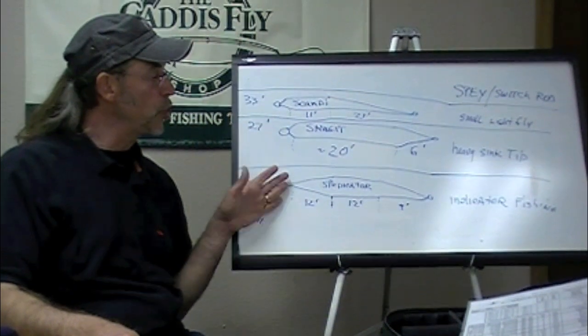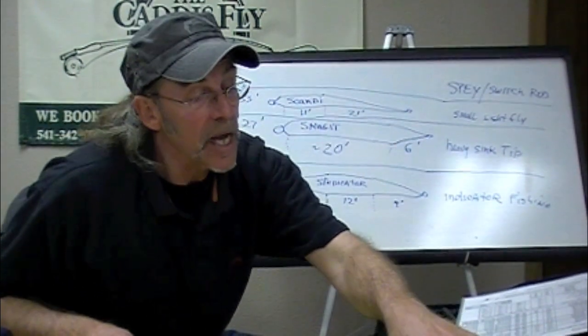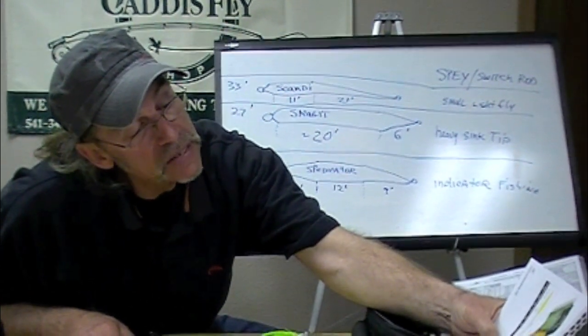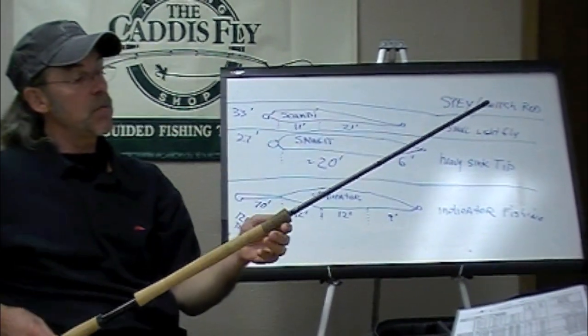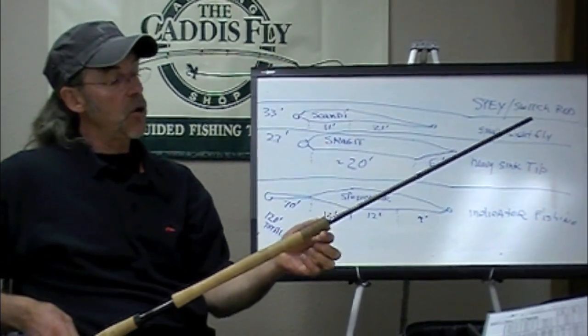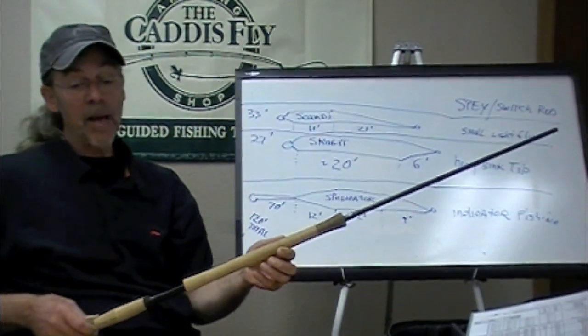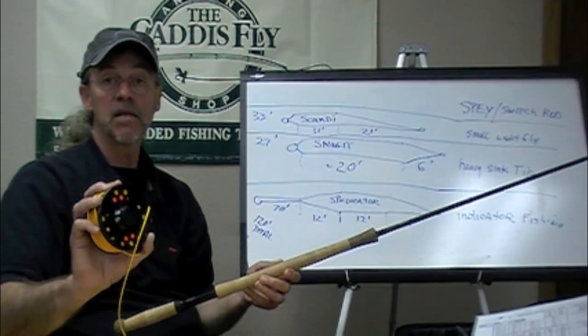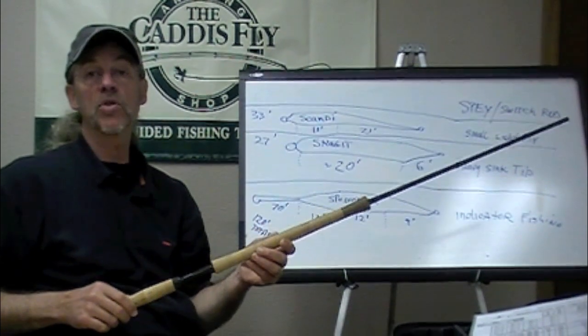So how do you choose the right weight? The speydicator lines come in weight forward 6 through weight forward 9. This is a Tim Rajeff Echo TR spey rod, a 7-weight. I grabbed this speydicator line out of the box—it's rated as number 7. I fished it, and it performs amazingly.